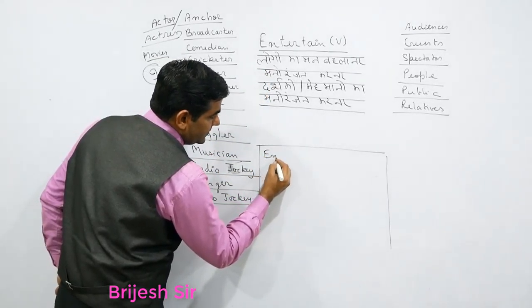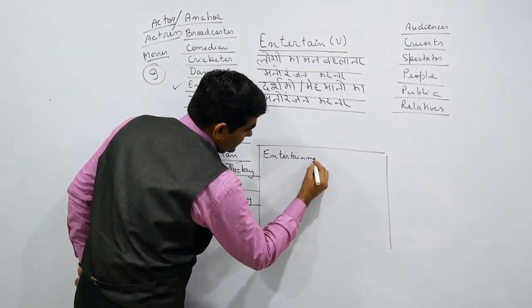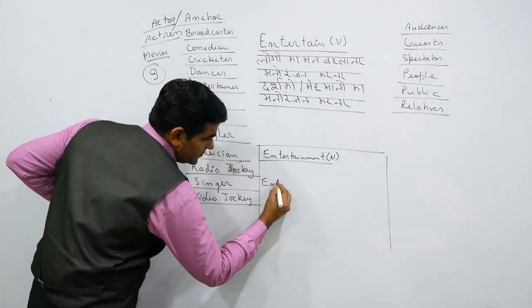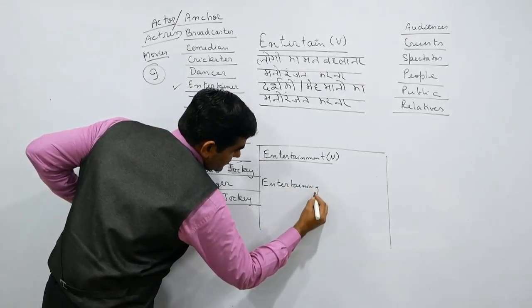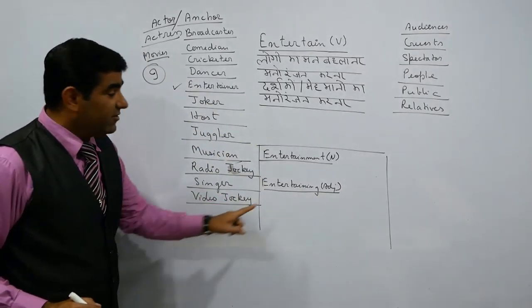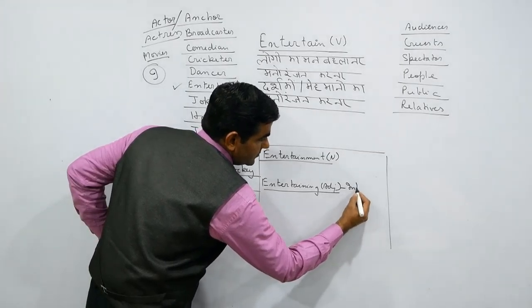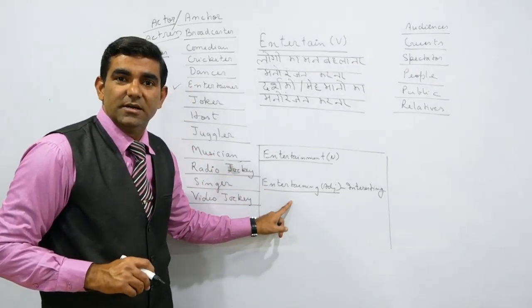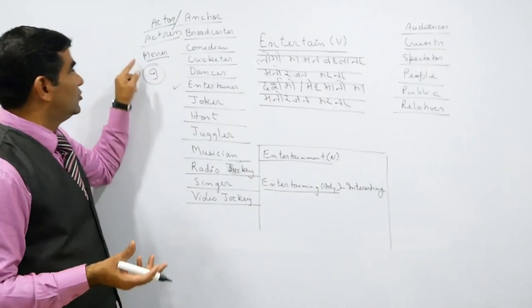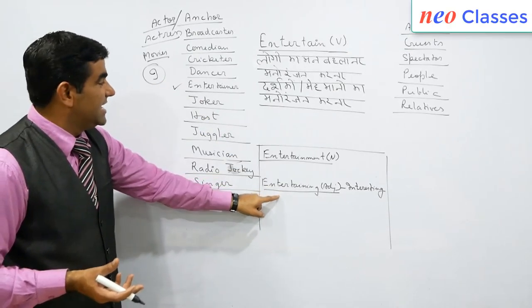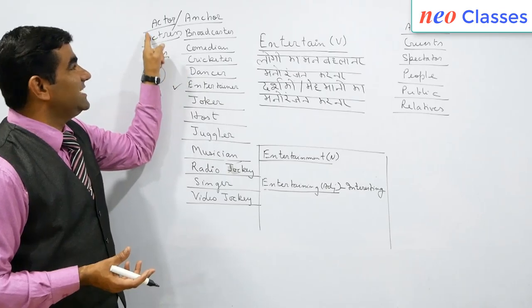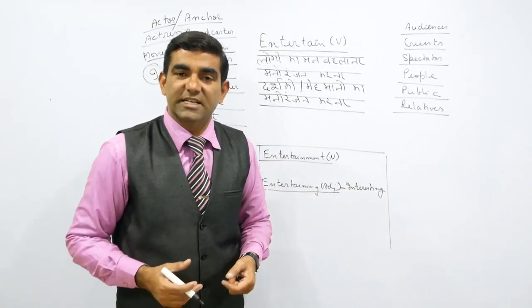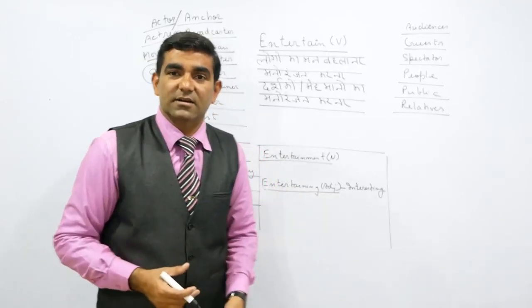Entertains. One word is Entertainment, which is a noun. And another word is Entertaining. Entertaining has another meaning: interesting. That is, one who entertains. Like entertaining movie, entertaining dancer, entertaining singer, entertaining actor. What is Kapil Sharma? Entertaining TV anchor, host.